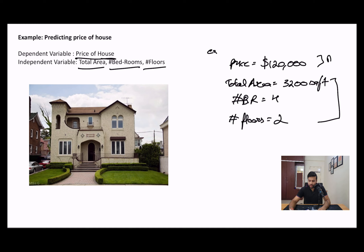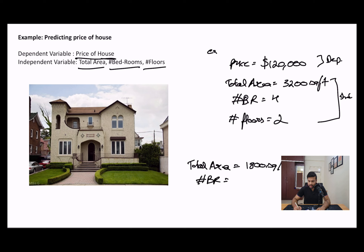This is your dependent variable and these are your independent variables that you will collect. You will collect a lot of these data points and then train your linear regression model on them, such that it is able to come up with a relationship. In future, when you give it a new set of independent variables — say, a house with a total area of 1,800 square feet, 3 bedrooms, and 1 floor — you can use that trained model to predict the house price using these three parameters.